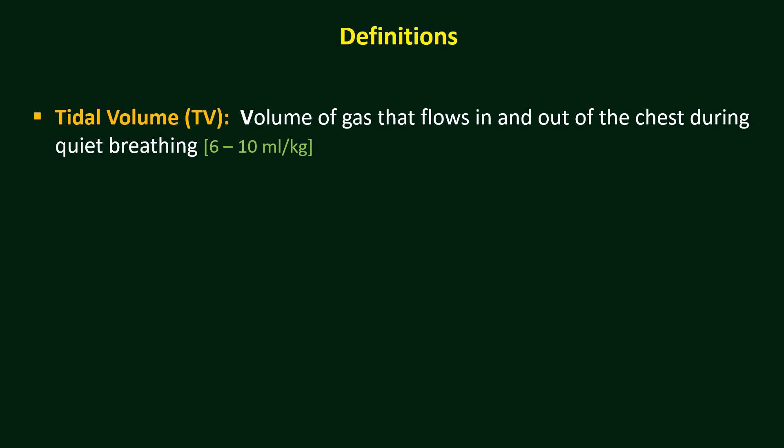Here are a few definitions. First is Tidal Volume. It is the volume of gas that flows in and out of the chest during quiet breathing. It is usually 6 to 10 ml per kg.